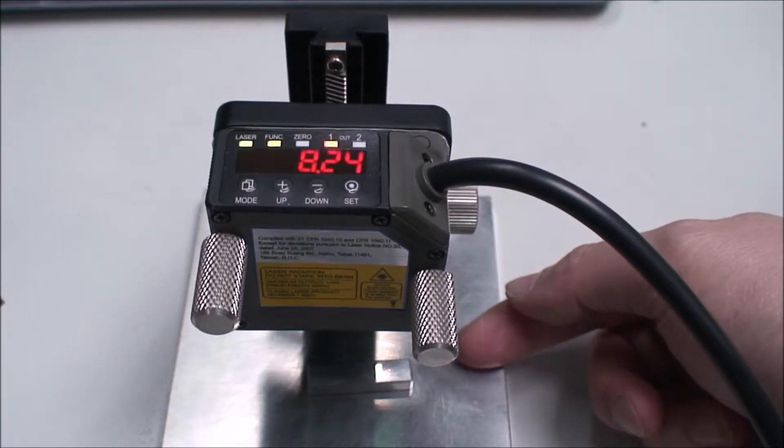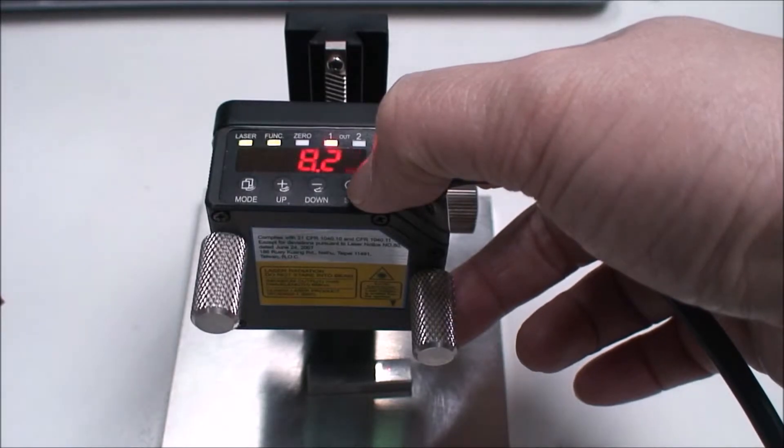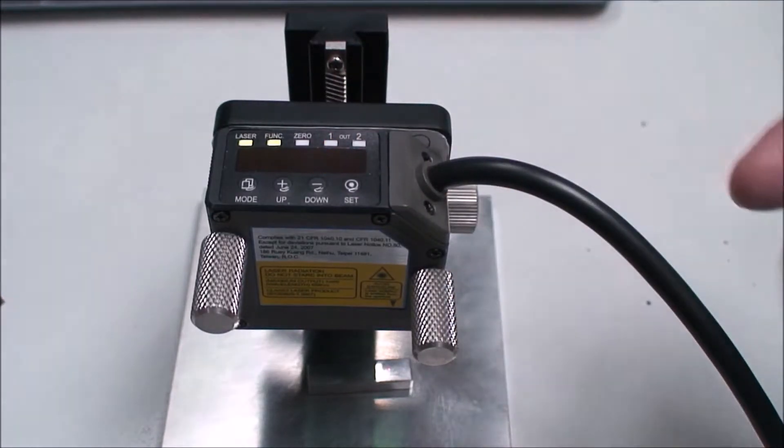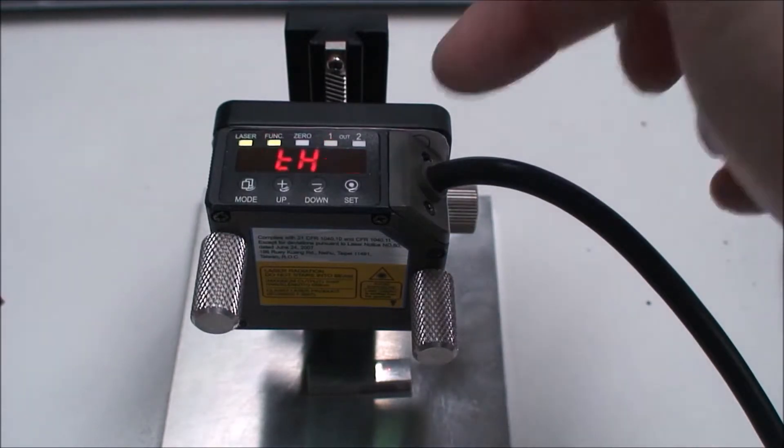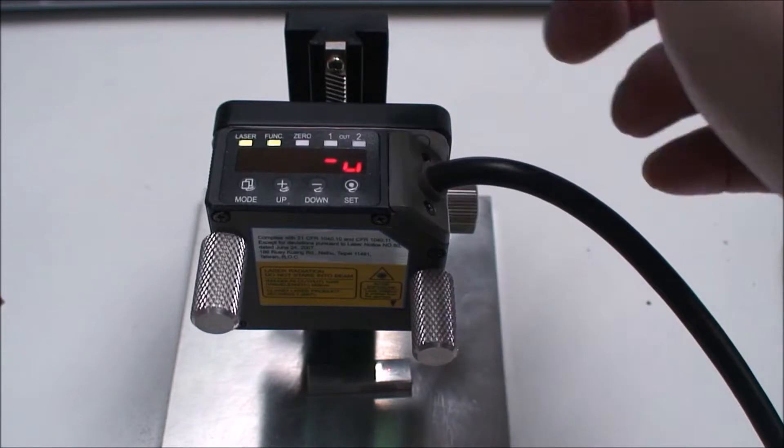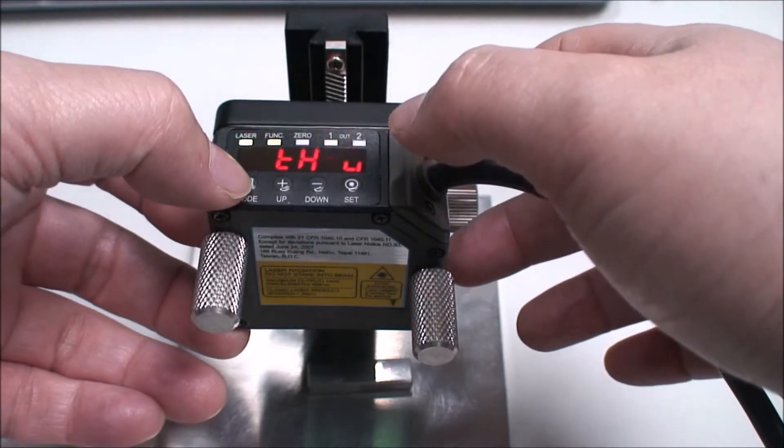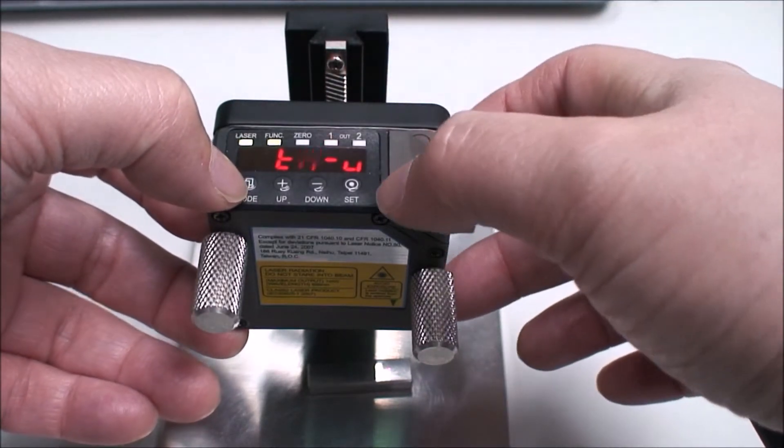So move the target and then press the setup key. The data is 8.24, 8.25. The data will also store the teach value back to the 1P measurement mode in R1 channel.